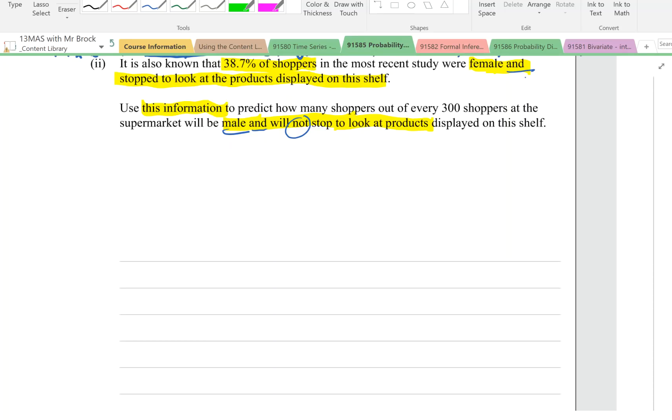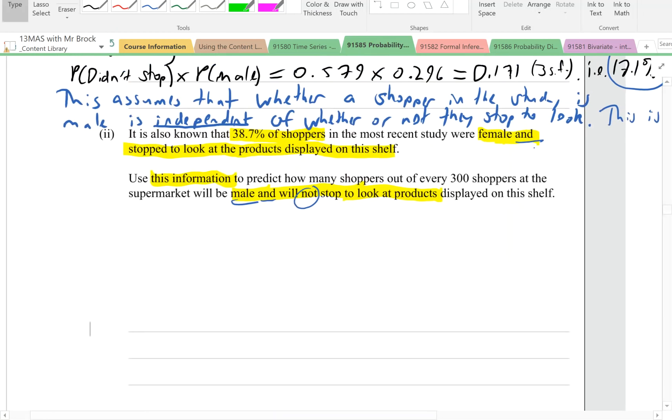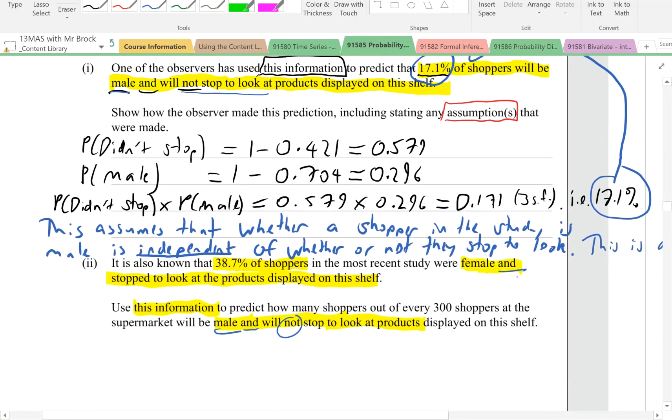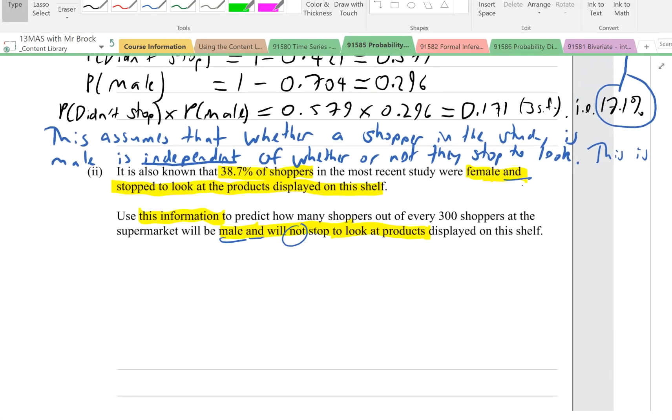We only need to move beyond a two-way table if either some of the probabilities we're given in the question are conditional ones, because it's hard to show conditional ones in a two-way table, then we'd use a tree diagram. Or if we have three categorical variables, three things going on, then we'd need to use a three-way Venn diagram.